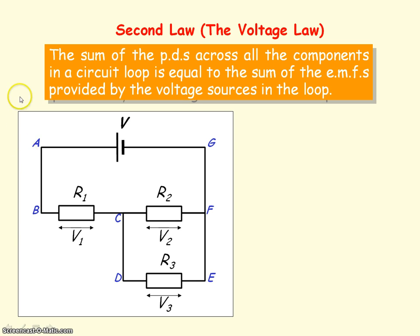Kirchhoff's second law, which is also known as the voltage law, states that the sum of the PDs, or voltages, across all the components in a circuit loop is equal to the sum of the EMFs provided by the voltage sources in the loop.